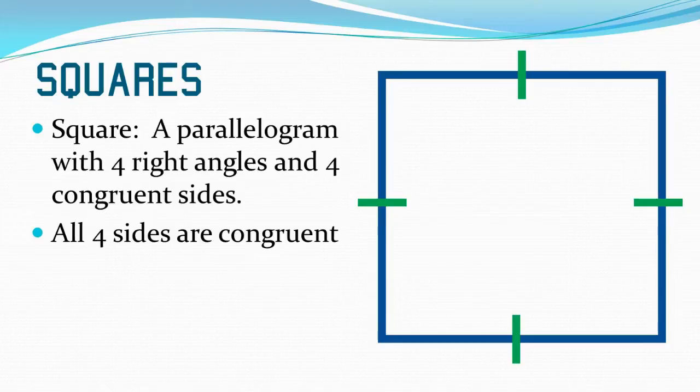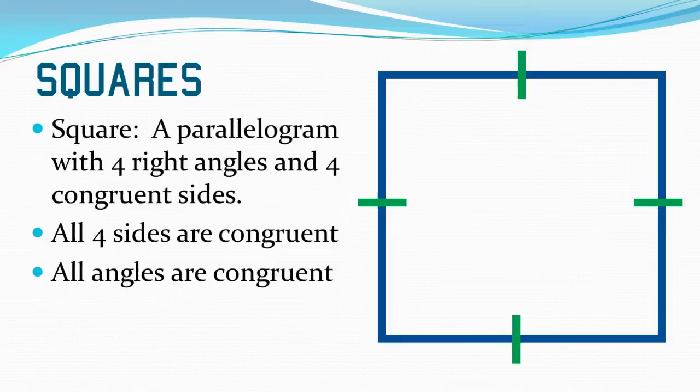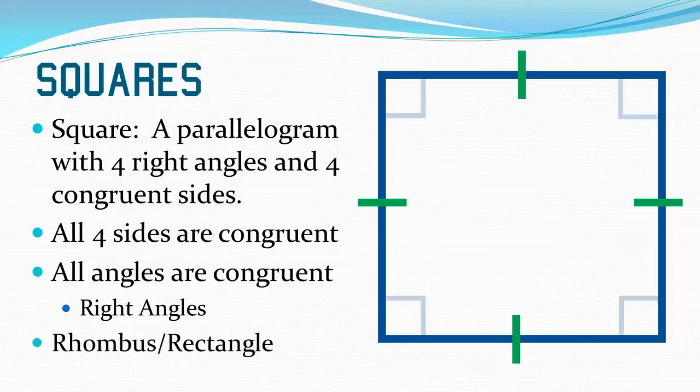They're all the same exact measure. Knowing that all four angles are congruent, more specifically they're right angles, does help us identify the shape. Because of these properties, the opposite sides, or in this case all four sides congruent, and all four angles are congruent, this makes the square a rhombus and a rectangle at the same time. It gets the right angles from the rectangle and it gets the congruent sides from the rhombus.